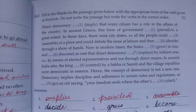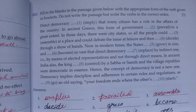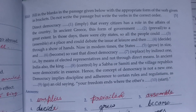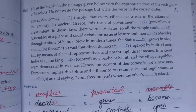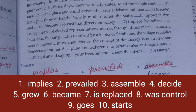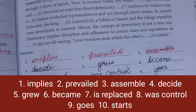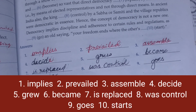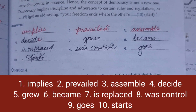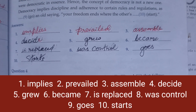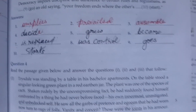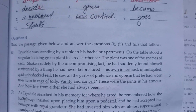Next, fill in the blanks with the appropriate form of the verb given in brackets. Read the passage and here are the solutions: first — implies, second — prevailed, third — assemble, fourth — decide, fifth — grew, sixth — became, seventh — replaced, eighth — was controlled, ninth — goes, tenth — starts.